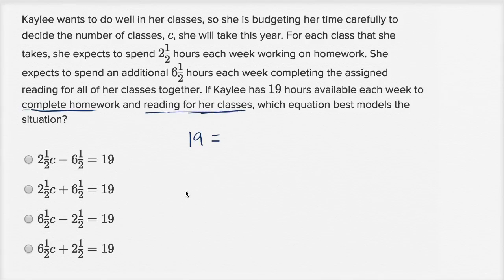So how much time is it going to take her to complete the homework? Well, it says that she expects to spend 2½ hours each week working on homework for—for each class that she takes, she expects to spend 2½ hours each week working on homework. Let me underline that. For each class that she takes, she expects to spend 2½ hours each week working on homework. So it's going to be 2½ hours each week per class.